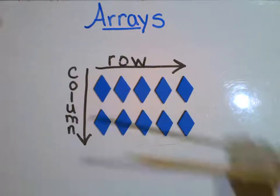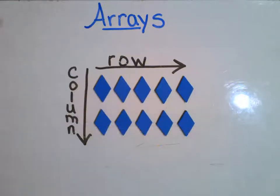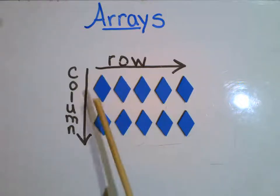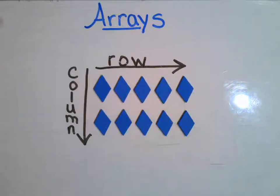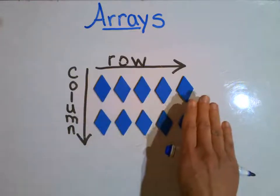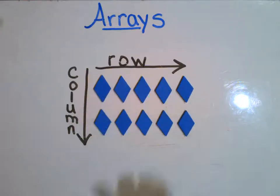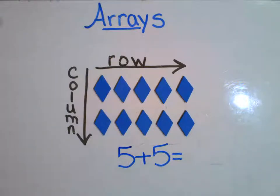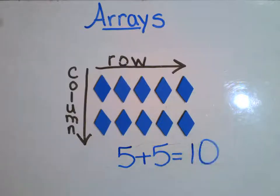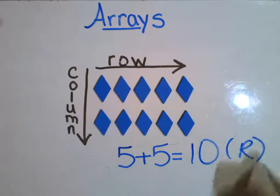So with my rows, remember I have two. That means I'm going to be adding the same number two times or twice. Let's figure out how many are going to be in each row: one, two, three, four, five. So that means I'm going to be adding five and another five. Five plus five equals — that's an easy peasy because that's a simple doubles fact. You probably already know the sum. It's going to be 10.